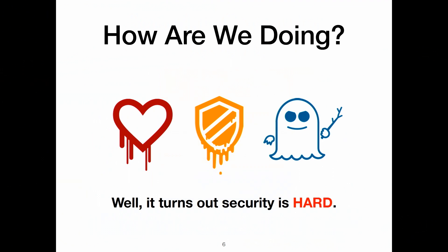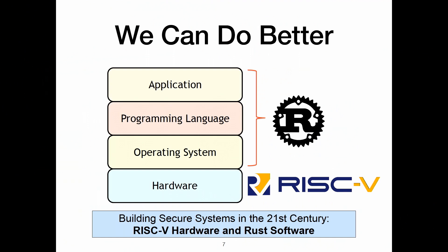So, how are we doing? It turns out, as an industry, security is hard. We've seen a number of new attacks on hardware — speculative execution attacks, things like Heartbleed. It's very challenging to secure computer systems, especially since we're building on legacy technologies. Can we do better? I believe we can. In the 21st century, we can start looking beyond these legacy technologies, looking at things like RISC-V and Rust to build a secure foundation for building secure systems.